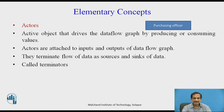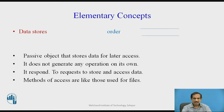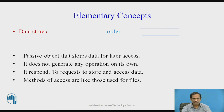Actors are called terminators. The next concept is data stores, shown as parallel lines or files. An order file is an example. The passive objects store data for later access and do not generate any operation on their own. In response to a request to store or access data, the methods of access are like those used for files.